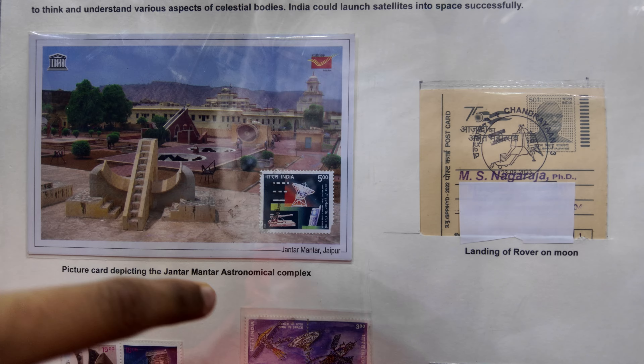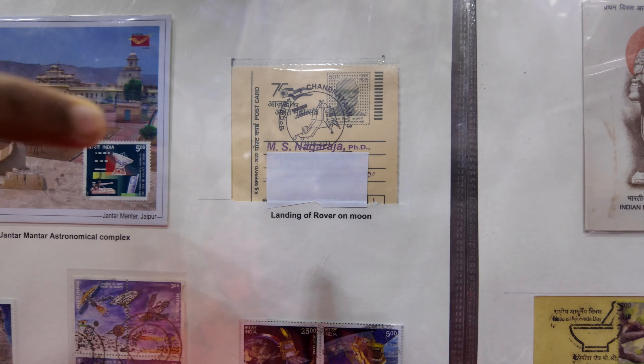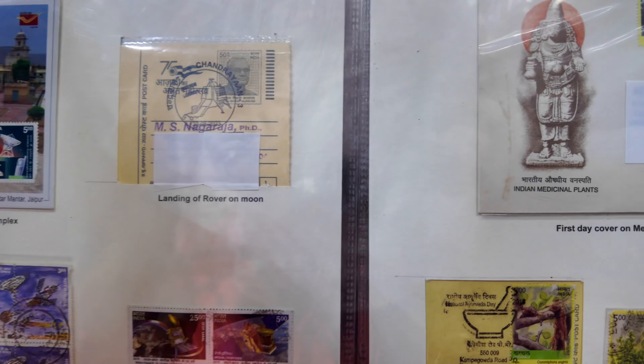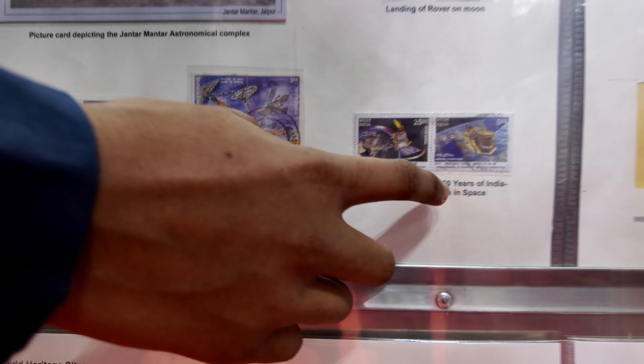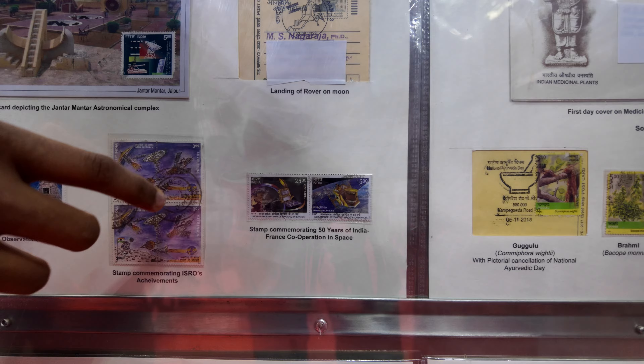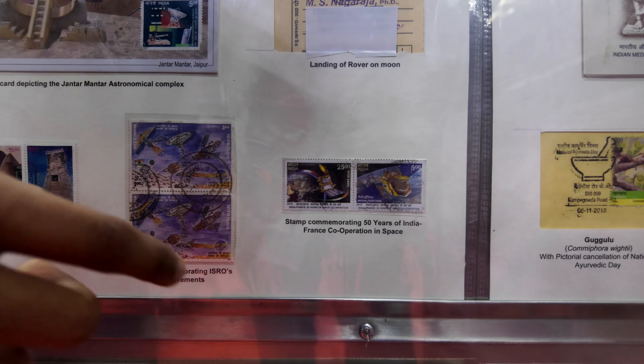In Jantar Mantar, it is an astronomical complex. Recently India launched Chandrayaan-3, which was a success. This is the special pictorial cancellation of Chandrayaan-3, and these are all special stamps for Astronomy.